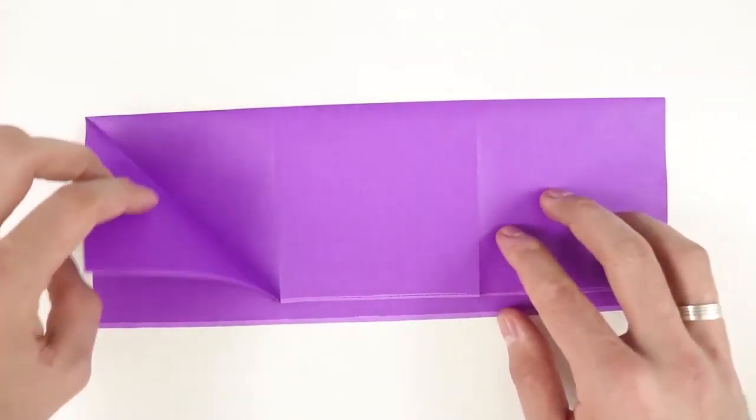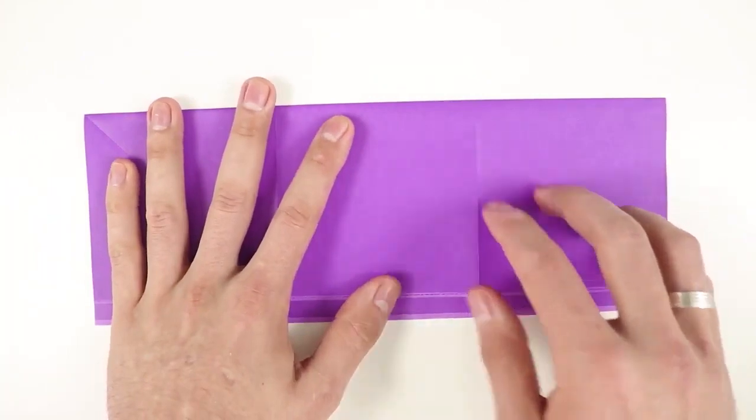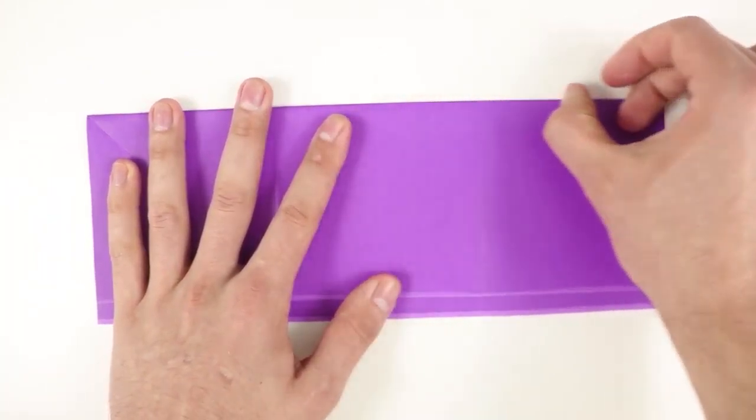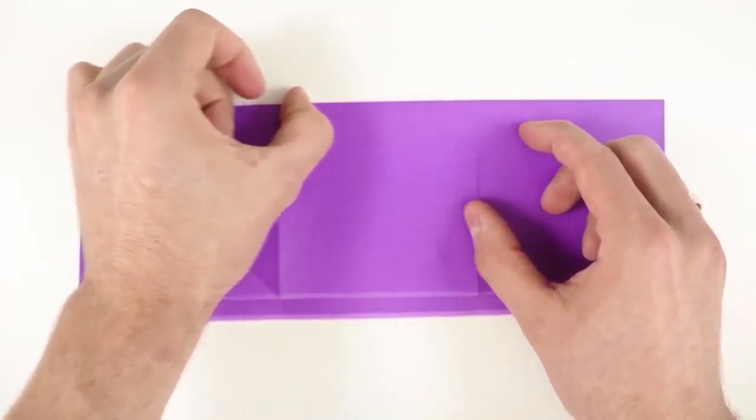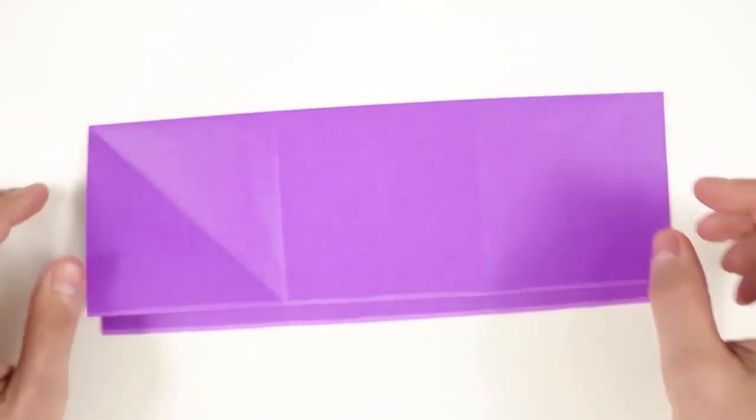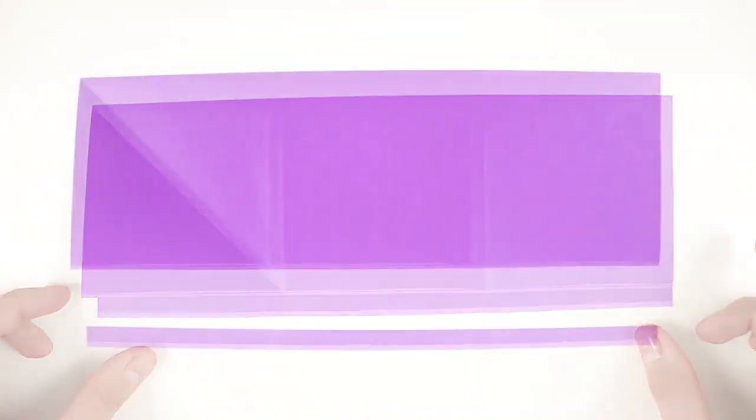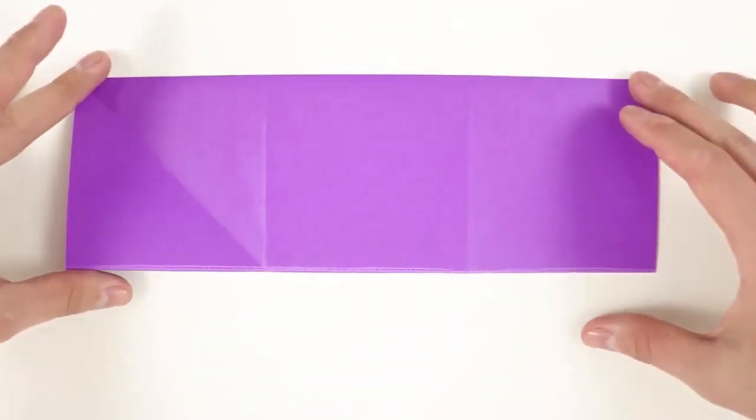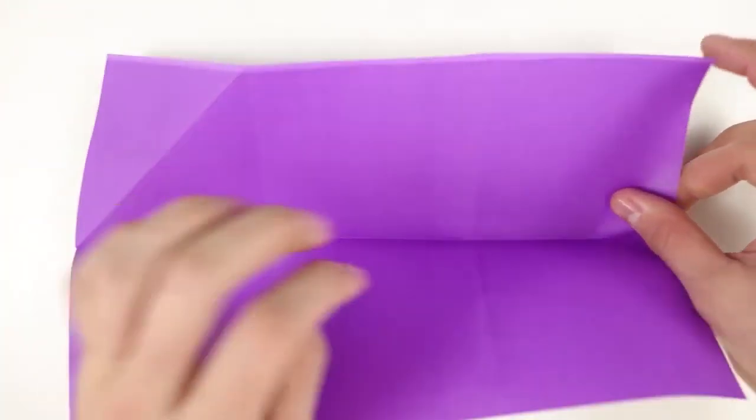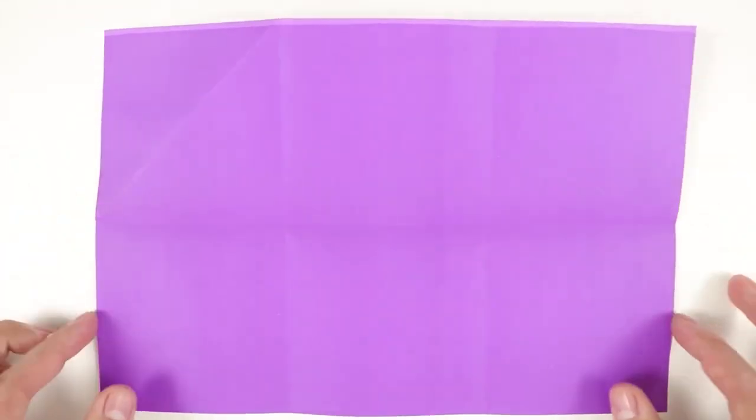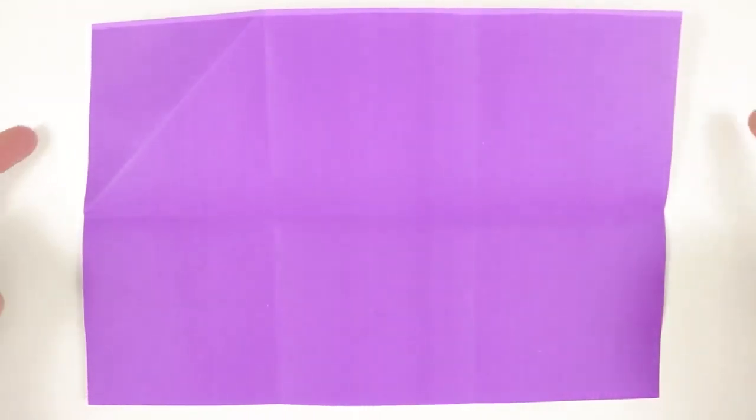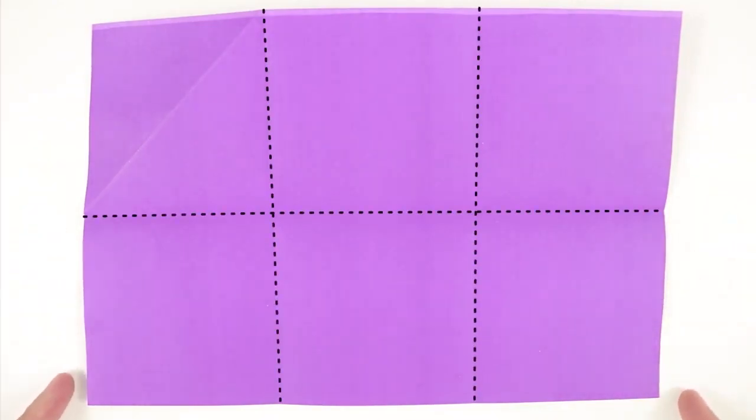Unfold the diagonal crease, cut off the extra paper, and as you can see, we have six squares. Cut to separate them, using the horizontal and the vertical creases.